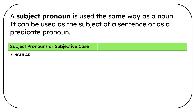We have singular and plural. In singular, we have I, you, she, he, it. In plural, we have we, you, and they.